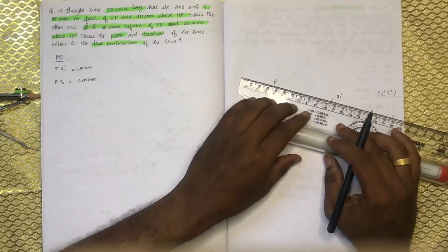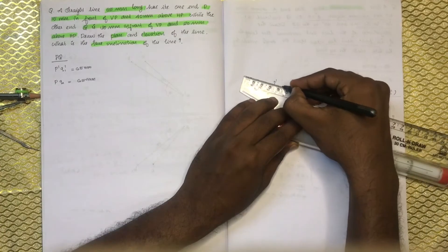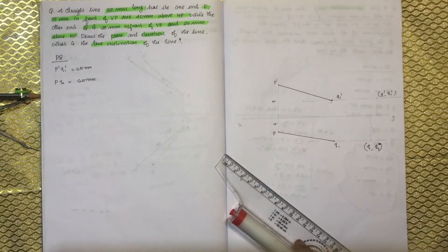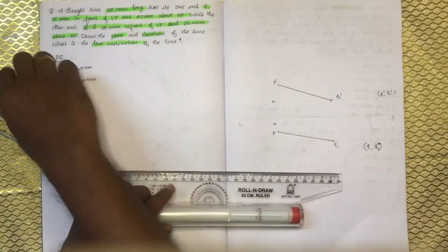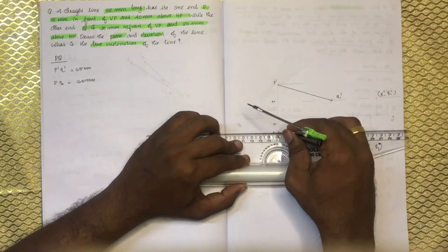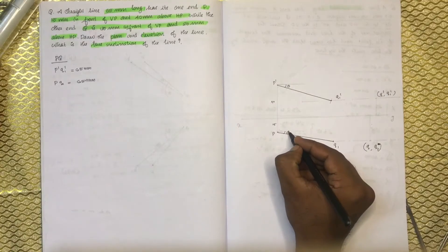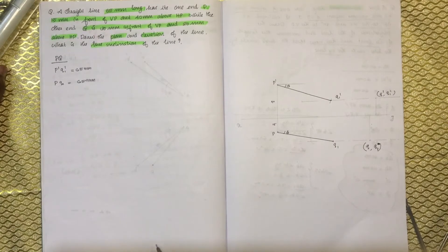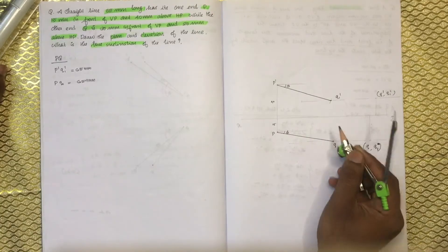We will not have issues with the first question. The plan and elevation will be true. Now we will fix the inclination. The theta in the horizontal view — we will fix this inclination. The point is we will put Q' and Q1', then Q and Q2'.